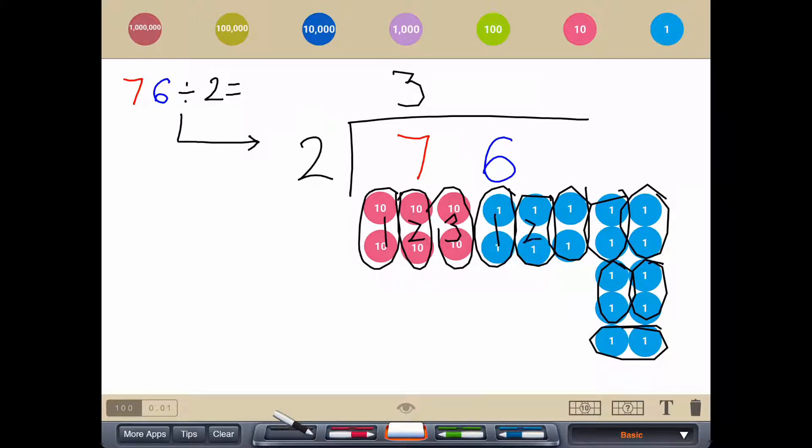So that tells us 4, 5, 6, 7, 8, tells us that we have 38. So 76 divided by 2 is 38.